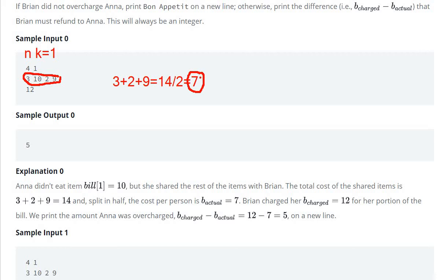But here the bill is 12, which is overcharged. So my bill overcharged minus bill actual: the answer will be bill overcharge 12 minus actually 7, so answer will be 5.